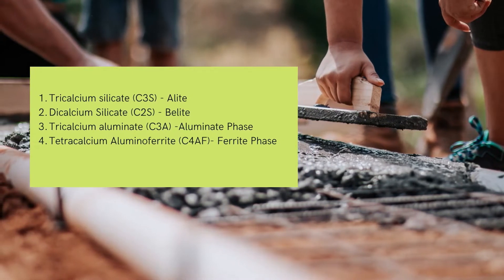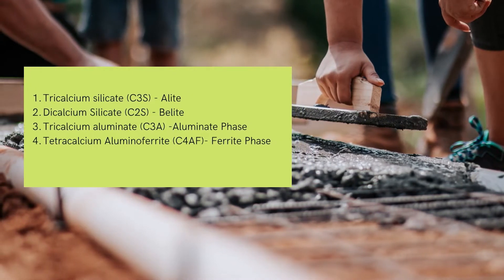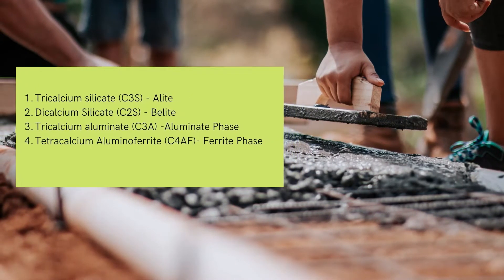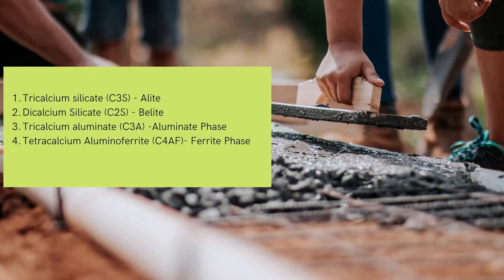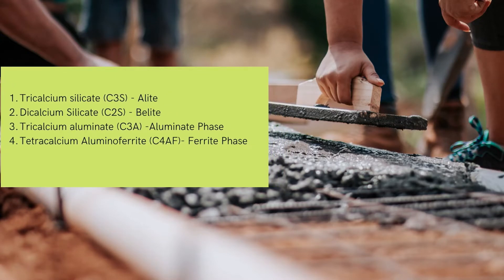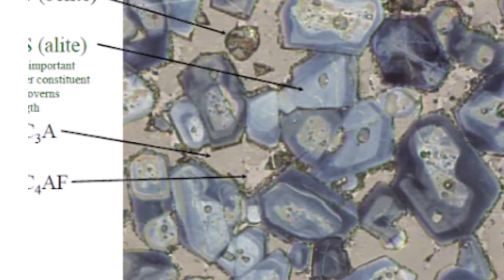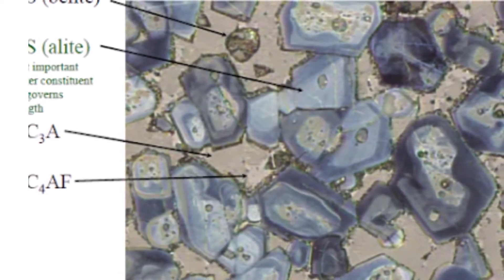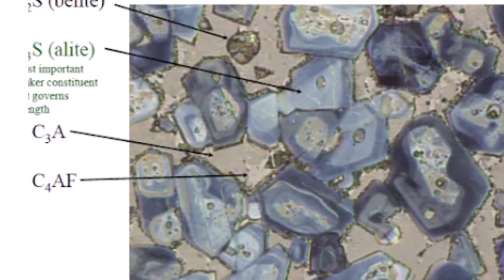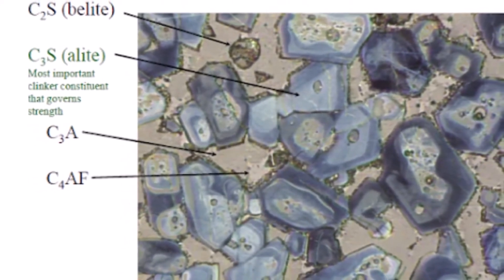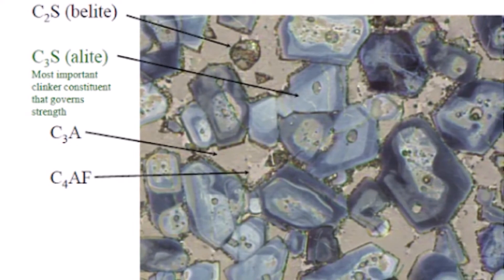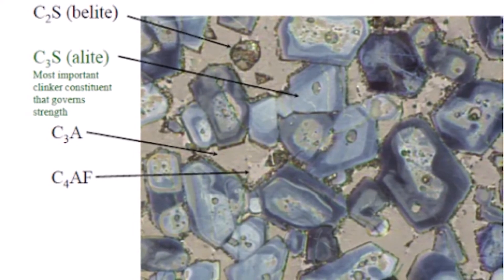The other two main Bogue compounds are tricalcium aluminate C3A, or the aluminate phase, and tetracalcium alumina ferrite C4AF, which is the ferrite phase. The figure shows a pictorial representation of the different Bogue compounds present in cement in a microscopical view.